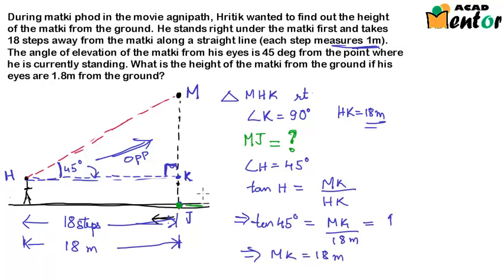Now we just need to find out the length of KJ so that we can find the total length MJ. KJ is nothing but the height of Hrithik's eyes. See this is a rectangle here. If this point is I, so HIJK here forms a rectangle and HI would be equal to KJ.